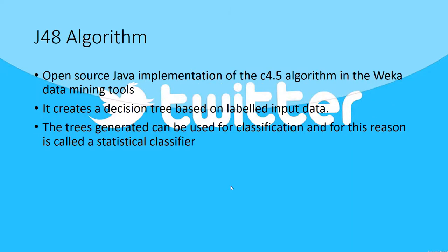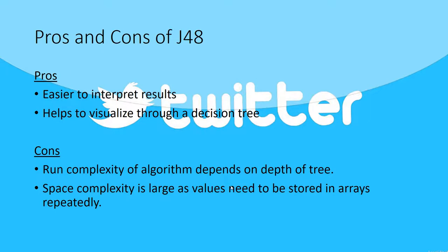The J48 algorithm is a Java implementation of one of the most well-known algorithms in machine learning. It creates a decision tree based on the labeled data input. The pros are that it is very easy to interpret the results and it helps visualize the data through a decision tree. The con is that its complexity is very high as it depends on the number of attributes — if the number of attributes is very high, the tree will be very deep and difficult to construct, using a lot of space. But these cons are overshadowed by the fact that the J48 classifier ended up being very accurate.